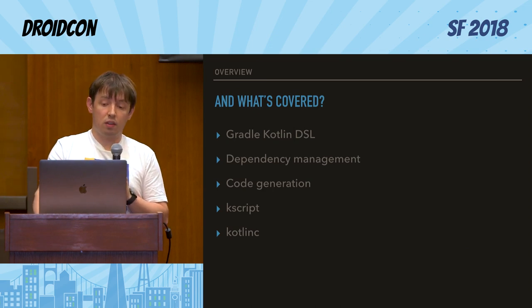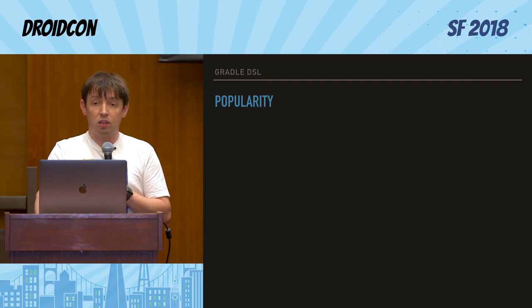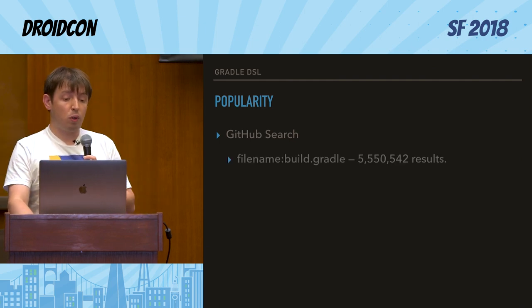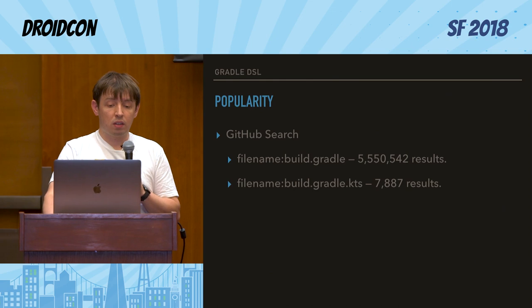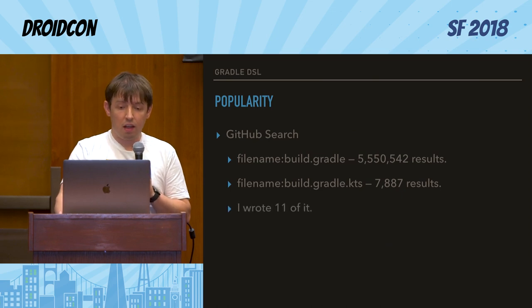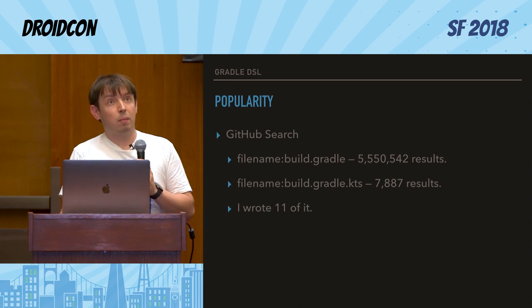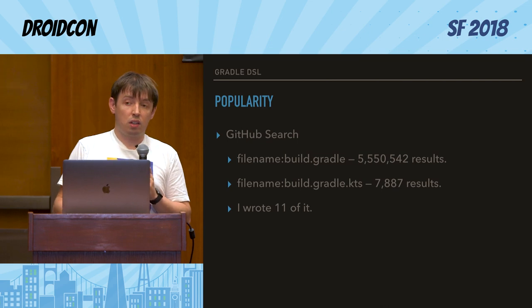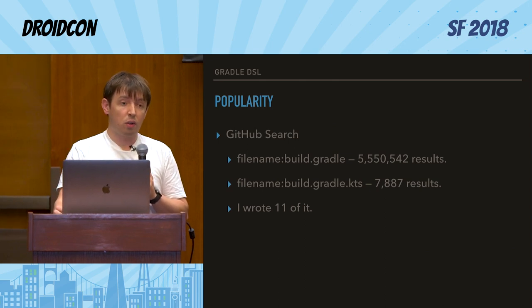Let's look at how popular Gradle Kotlin DSL is. The easiest way is to do a GitHub search. If we search for files called build.gradle, we get five and a half million files. If you look for build.gradle.kts, we get about 8,000 files. And I wrote 11 of them, so I think I can be one of the main domain experts — at least, that's how I felt when the first search result for resolving a Kotlin-Gradle script issue was actually my own repo.